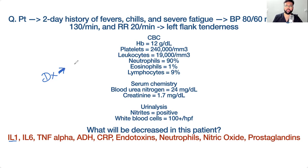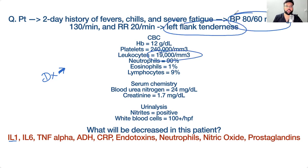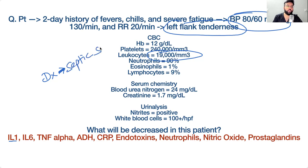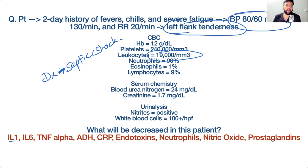A student initially suggests pneumonia, but the correct diagnosis is septic shock. There is left flank tenderness, leukocytosis, and hypotension. This is not interstitial lung disease — those findings point to septic shock. The left flank tenderness indicates the primary infection is in the kidney.